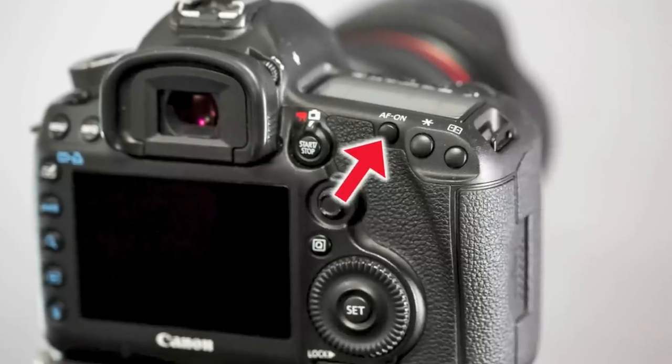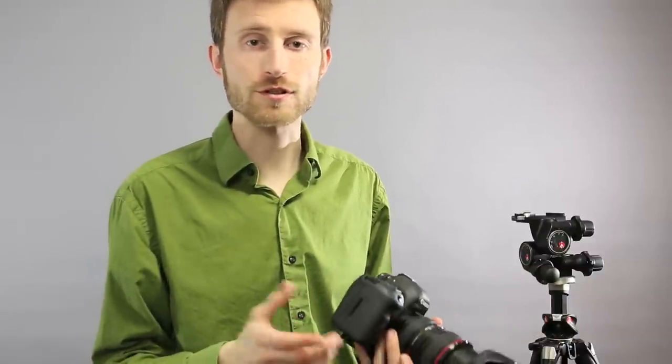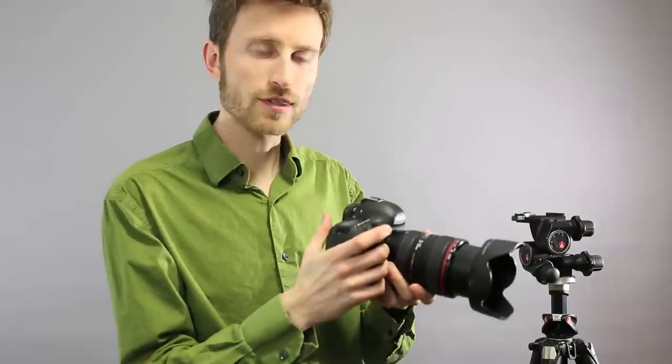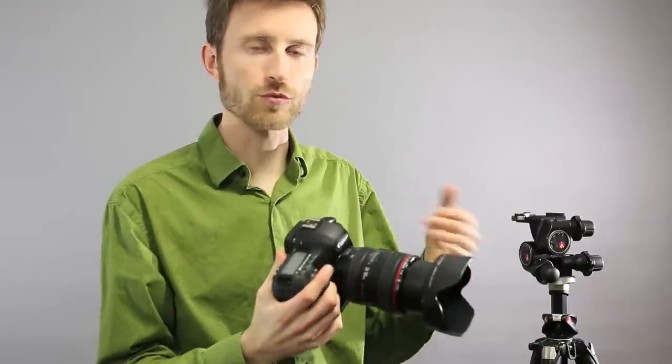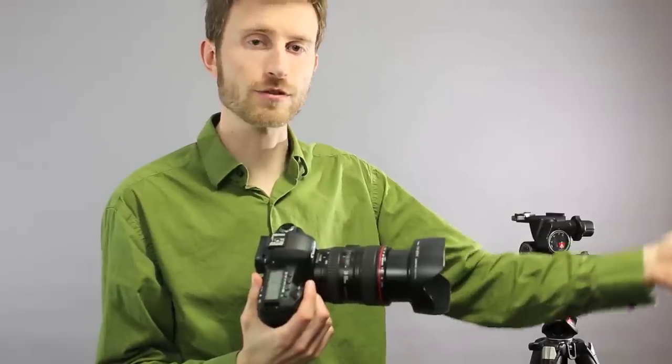AF on is a simple one. It actually just allows you to focus your camera. Now you're thinking, why would I want a button on the back if my shutter button already focuses? For those who are interested in sports photography especially, you know when you take that picture and your camera won't allow you to take that picture? Probably because the camera hasn't found the focus yet.